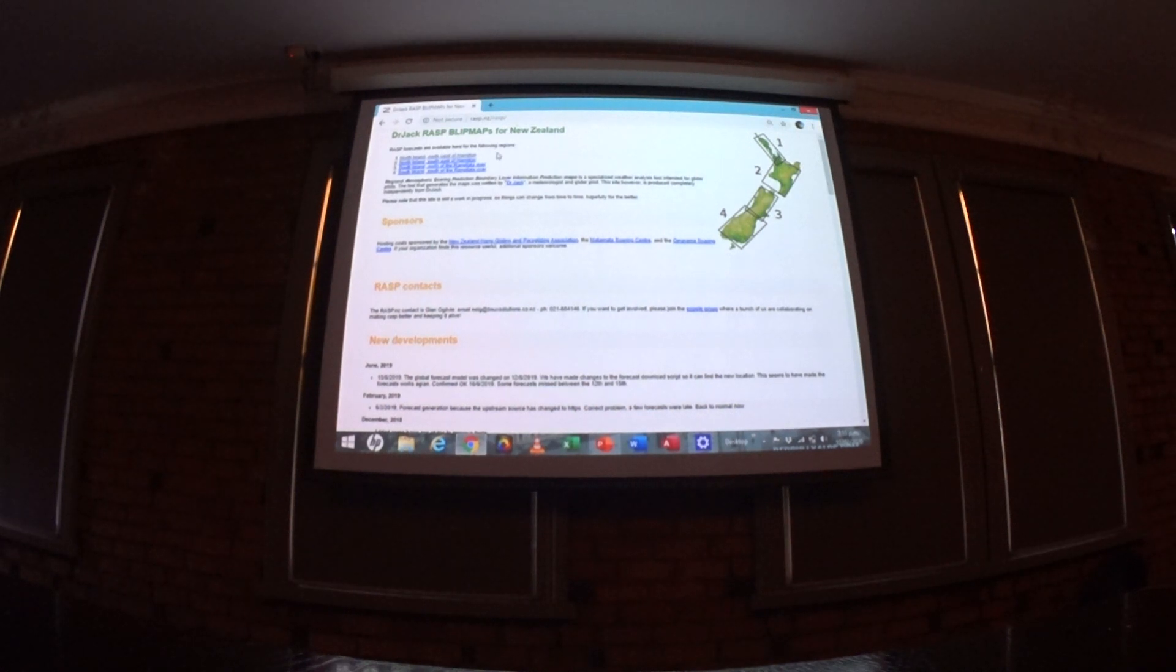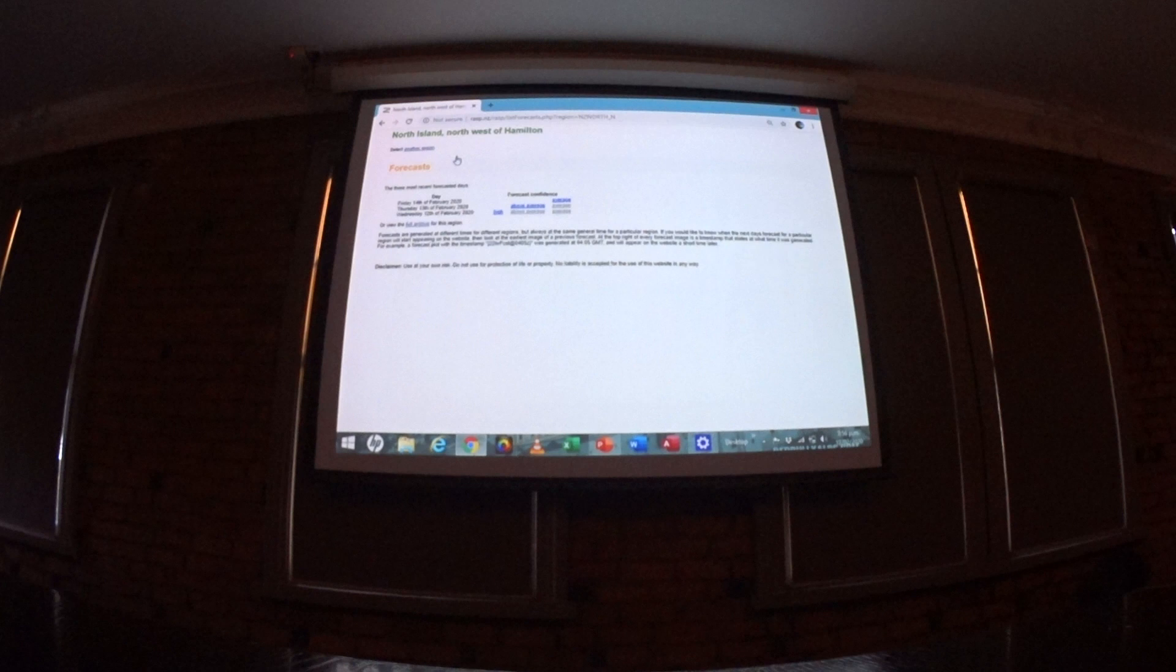From the RASP website, the top of the page gives you four location options. We obviously use the one we can fly up north, so we'll click into that location.